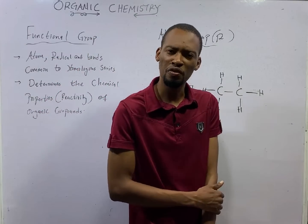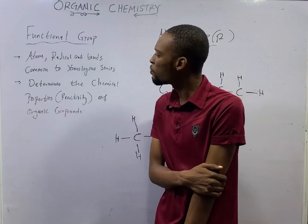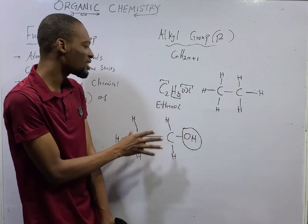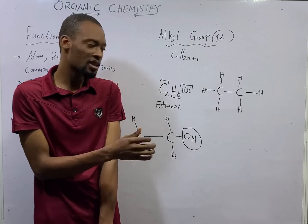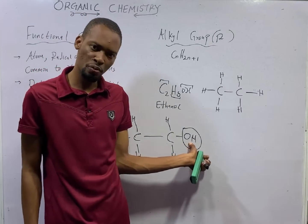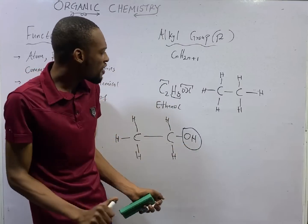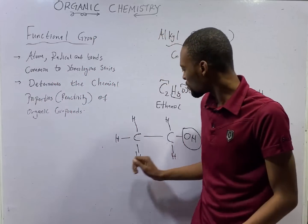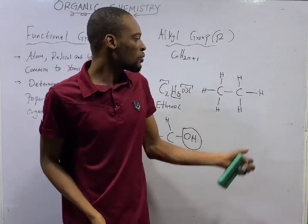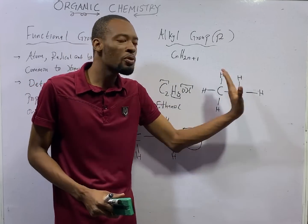This makes the two structures different from each other. So that takes us to functional group. Functional group is an atom, radical, or bond common to a homologous series. This particular homologous series is the alkanols homologous series — or alcohols. Any alcohol you see will definitely have the OH group. This OH group is what defines alkanols or alcohols, so every member of the alkanol family must have the OH group. This is an atom or bond that is common to a homologous series.